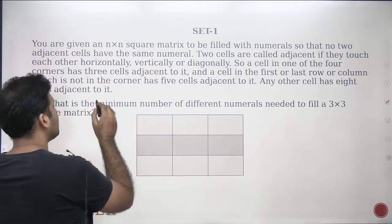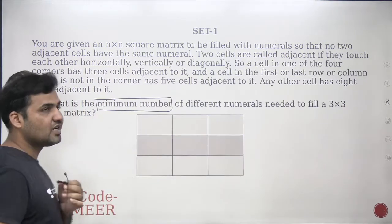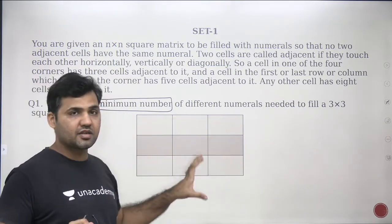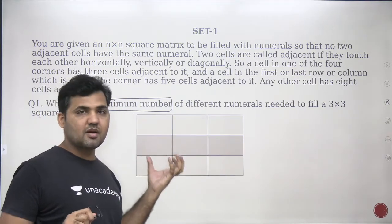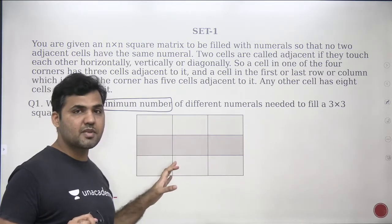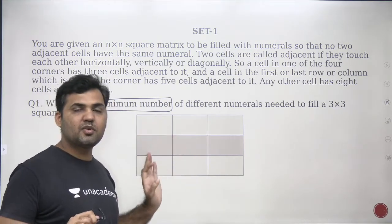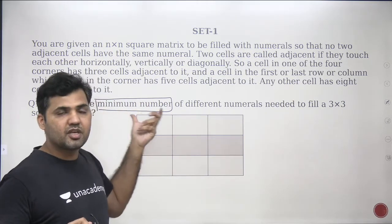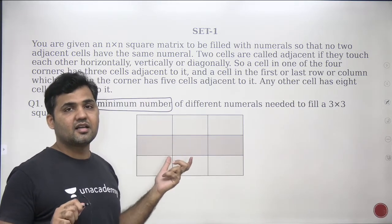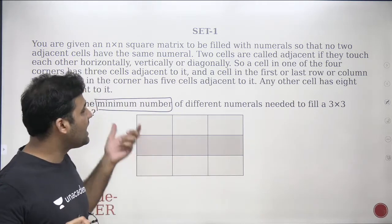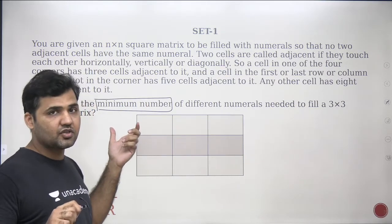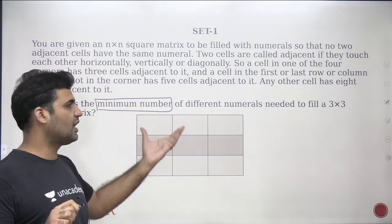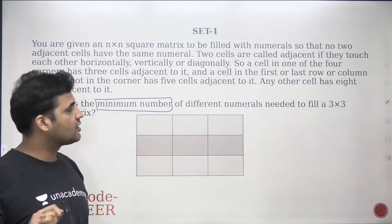The question says a minimum number of numerals — that means I need to use the minimum possible number of numerals to fill this matrix. Pay special attention to words like minimum, sum, all. These are key words which you need to give special attention. If you don't pay attention to these words, you will never know what you are actually supposed to answer.